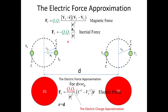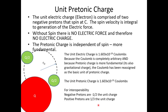You can do it the hard way, or when the distance is much greater than R-zero, you can use the electric force approximation. Because you're treating these as a single charge instead of a system of charges, this is the electric charge approximation. The unit electric charge of the electron is comprised of two negative pre-tons that spin at the speed of light. The spin velocity is integral to generating the electric force — without spin, there is no electric force and therefore no electric charge. Pre-tonic charge is independent of spin, making it more fundamental.